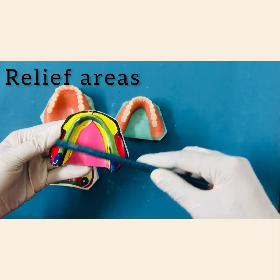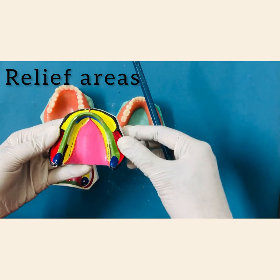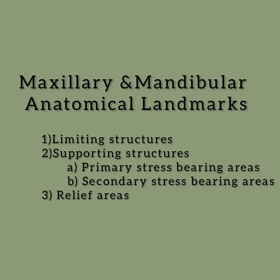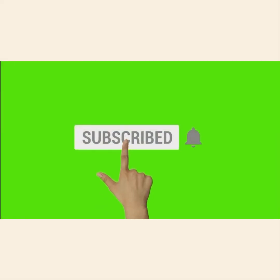So this is what we discussed this class: the classification of anatomical landmarks of the maxillary and mandibular arch under the three categories — limiting structures, supporting structures, and relief areas. We will be seeing each one in detail in subsequent classes. My next class will be on limiting structures in the maxillary arch. Until then, take care, stay safe.